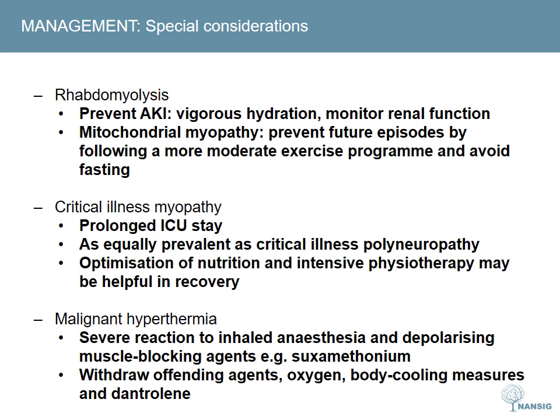We will briefly cover some non-typical but important disorders. For patients who present with rhabdomyolysis, treatment is aimed at preventing kidney failure in the acute setting. Vigorous hydration with close monitoring of kidney function and electrolytes is paramount. In patients with an underlying metabolic myopathy, education about following a more moderate exercise programme and avoiding intense exercise and fasting is useful in preventing recurrent episodes. Patients with prolonged stays in the intensive care unit are at risk for developing critical illness myopathy. A number of studies have shown it to be equal in prevalence to critical illness polyneuropathy. Optimisation of nutrition and the initiation of intensive physical therapy over a period of several months have been shown to be beneficial.